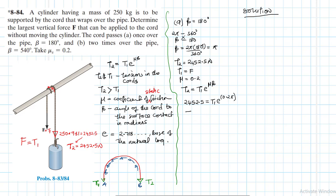Making T1 subject of the formula, if we made T1 subject of the formula, T1 would be equal to 1308.38 newtons. This is the solution for the first case.